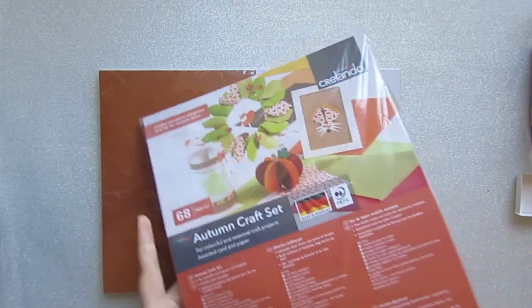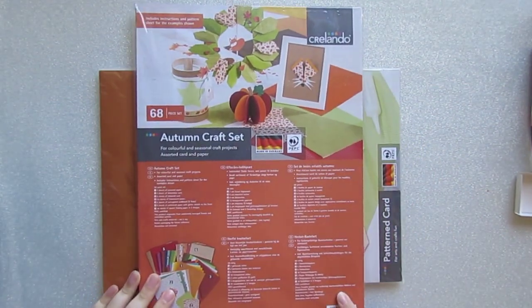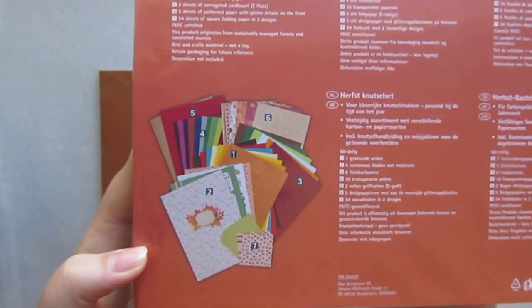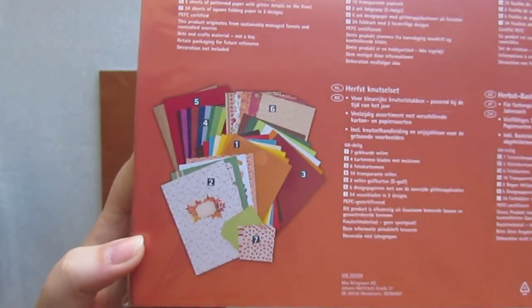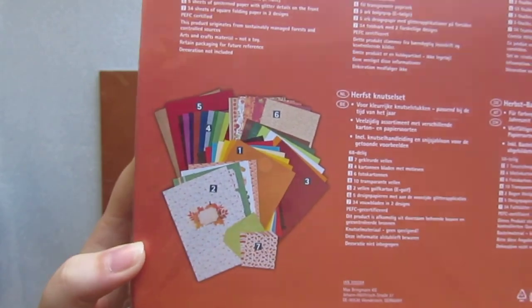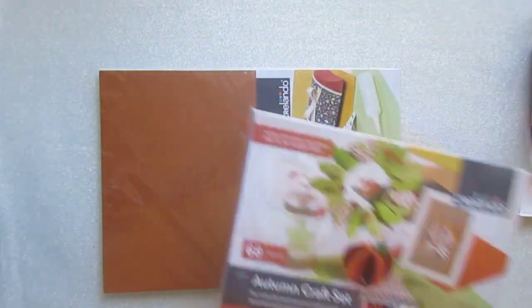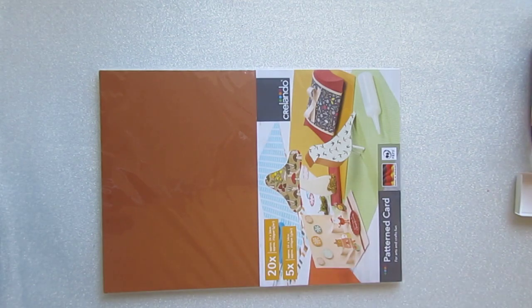I'll show you the back because it's got a tiny picture of all the different cards. At the end I'll come back and go through them all properly, because I know not everybody wants to sit through looking at every single sheet. Finally, she picked me up the Autumn Craft Set. It's got all different things in it, mostly card but some tissue paper and smaller papers.